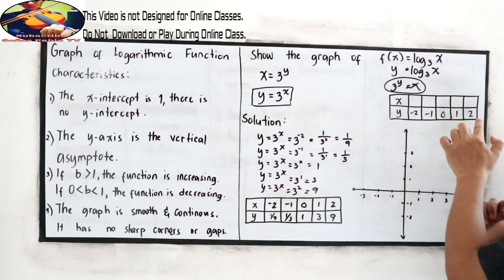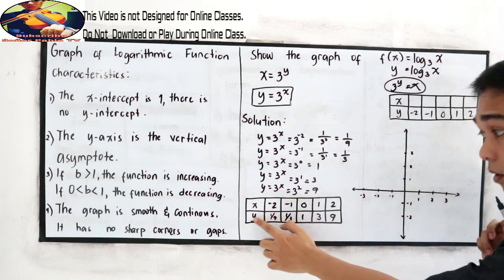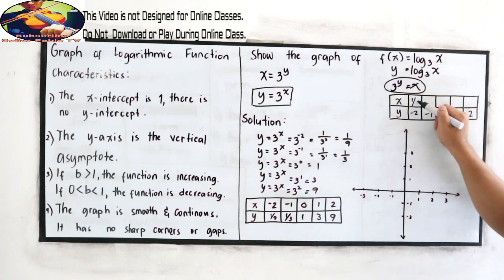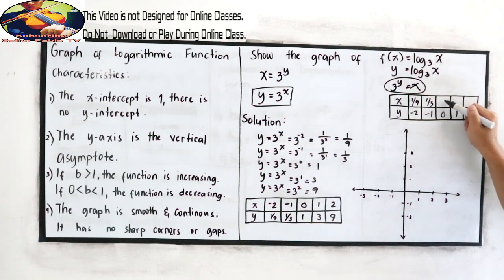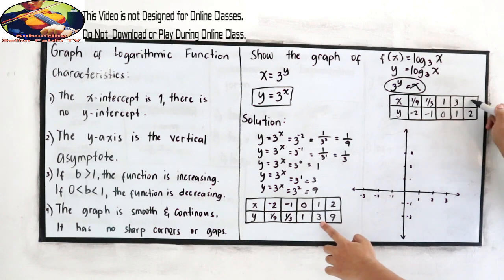Just interchange. Then 1 over 9, 1 third, 1, 3, and 9.